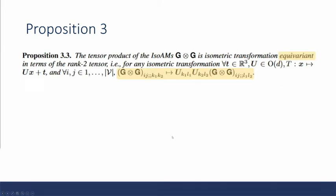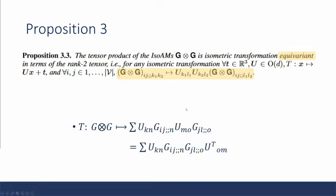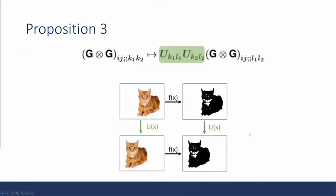And then we have proposition three, which is that the tensor product of iso-adjacency matrices result in isometric transformation equivariance. So we do the transformation of the tensor product, which results in this, and then once we rearrange, we can see that the orthogonal transformations are wrapping around the outside of the tensor product, which is just the coordinate transformation of our rank 2 tensor, which in other words means that it's equivariant to the orthogonal transformation. Coming back to the example of the cat, essentially this orthogonal transformation is, as the inputs transform, the output transforms the same way.